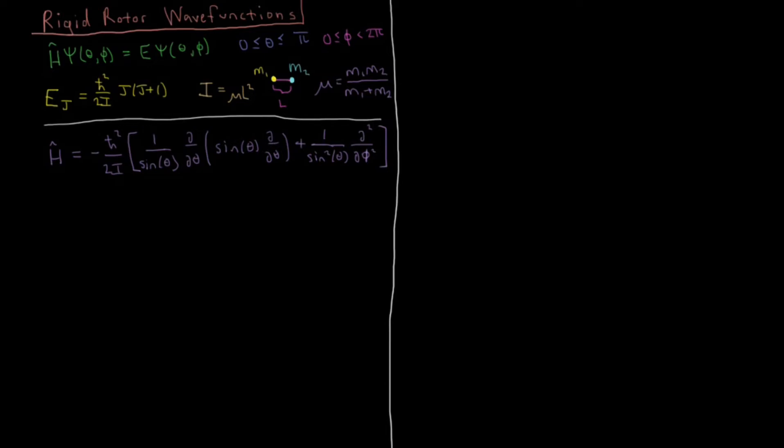Now we want to look at the wave functions for the rigid rotor. So we have our Schrödinger equation, H psi equals E psi, which we're going to solve for the wave function psi.